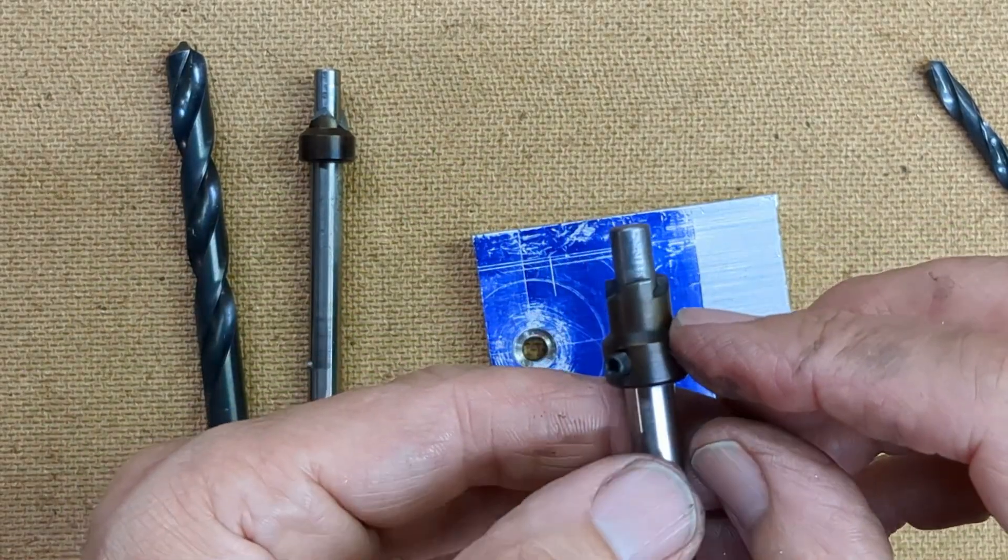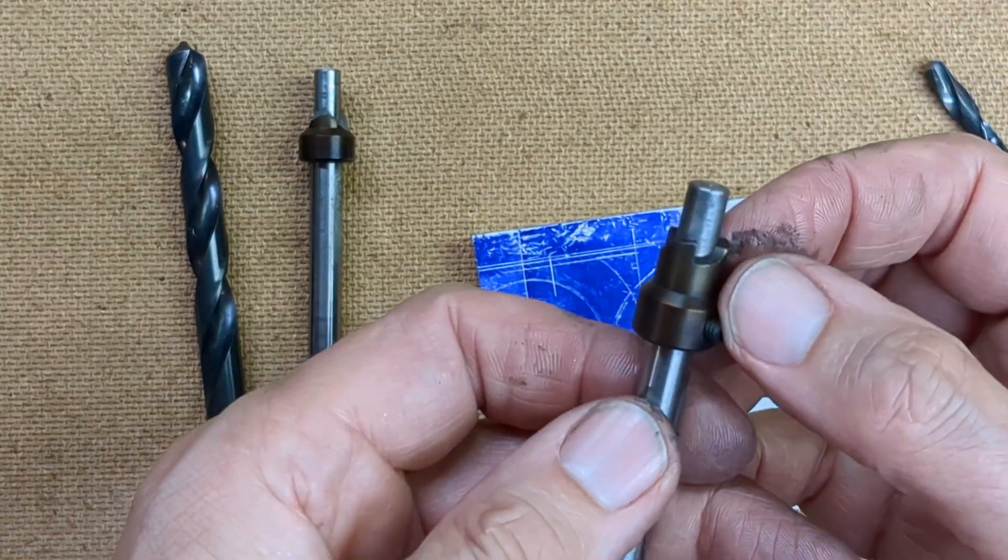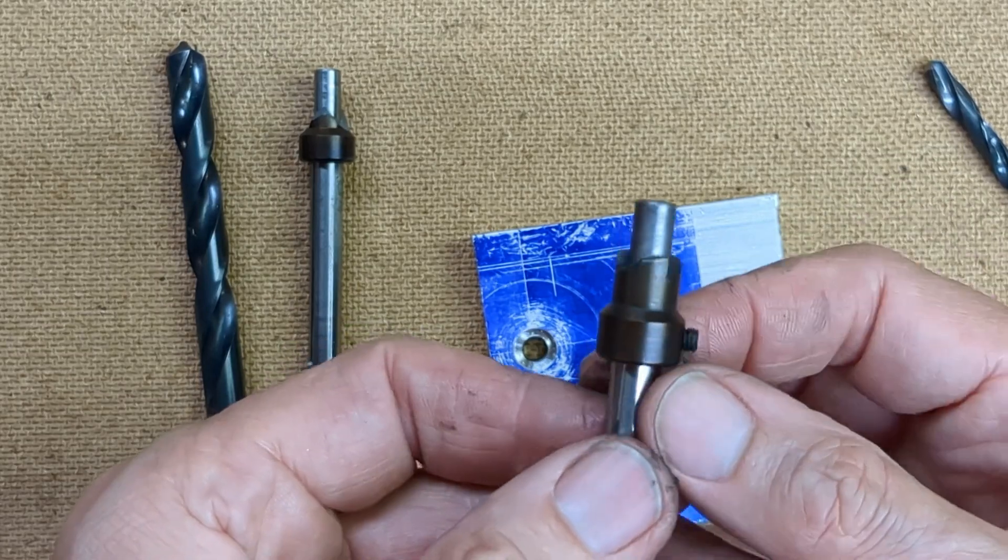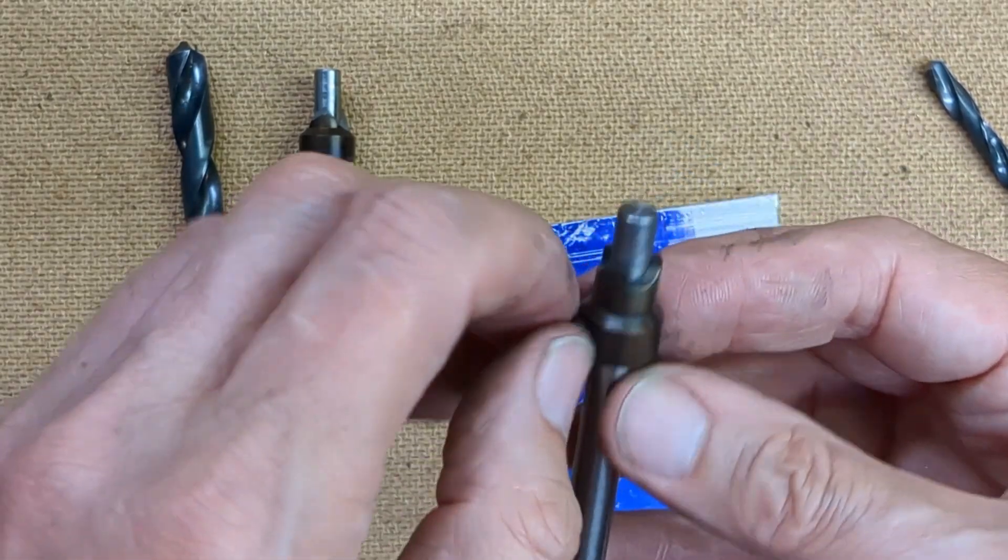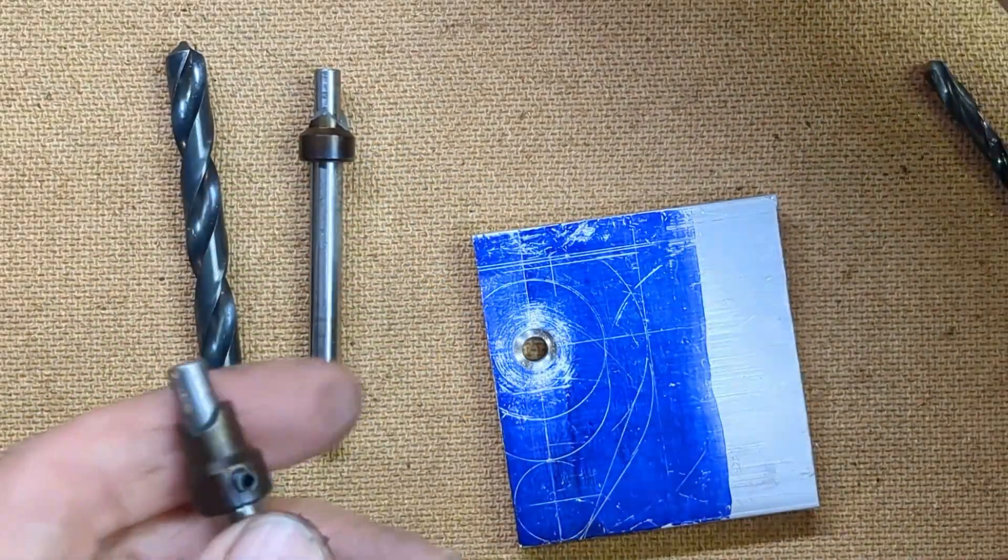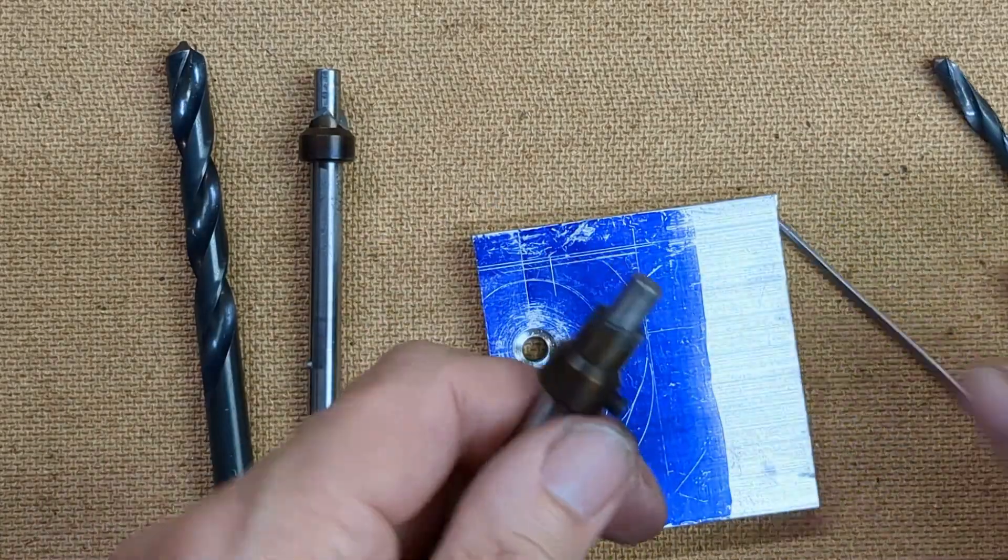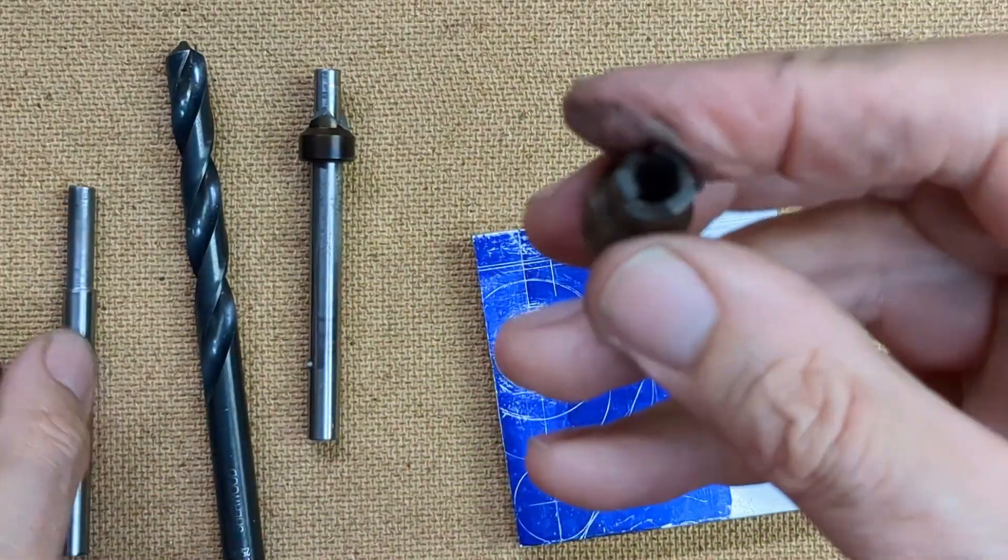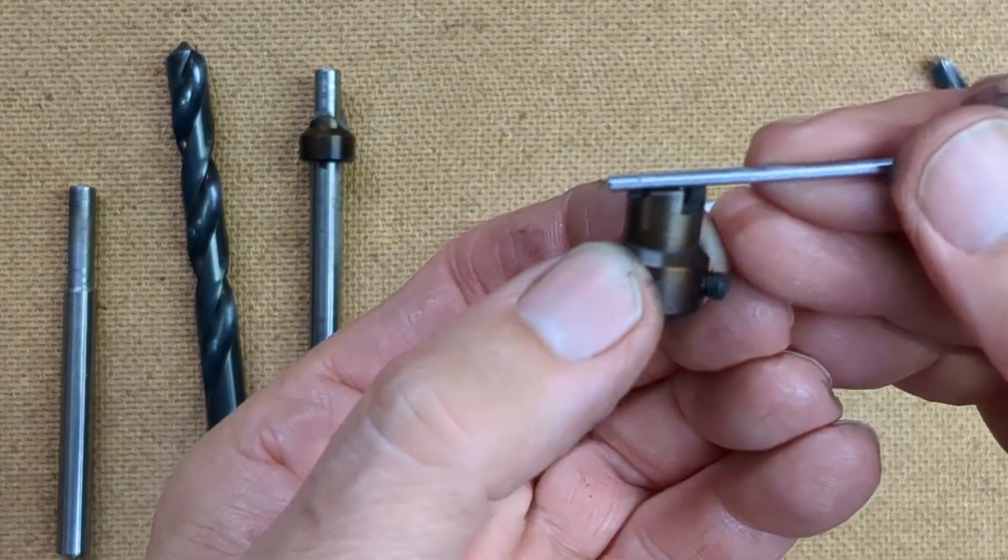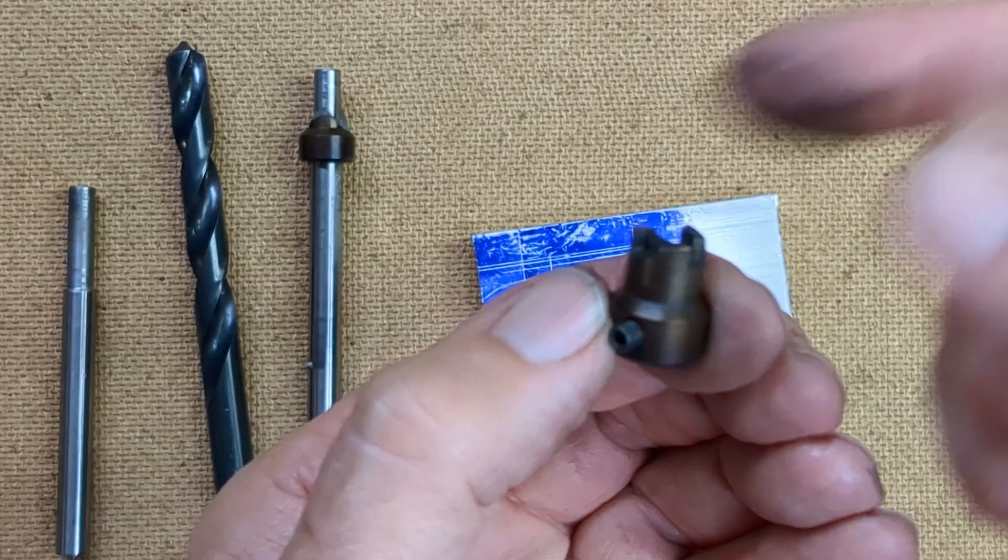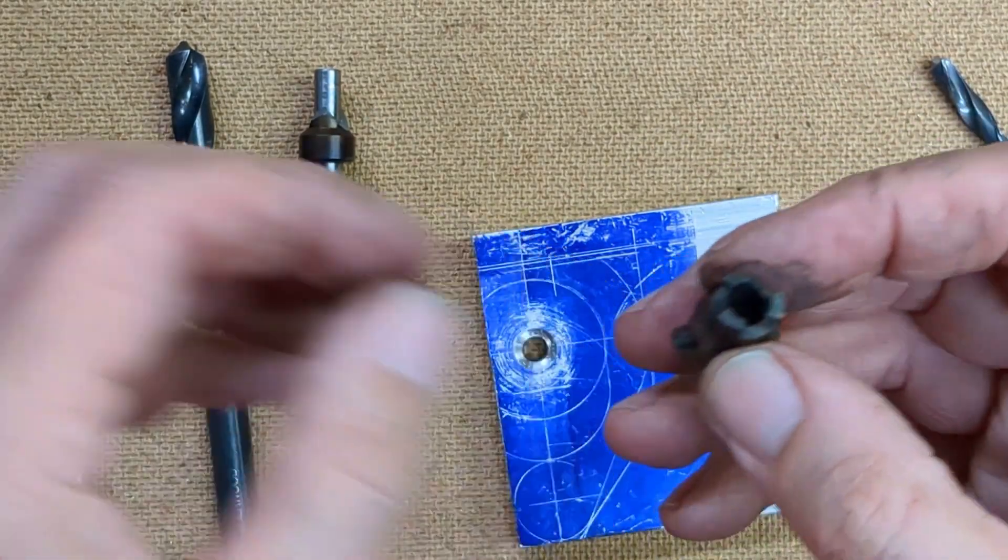And you can see why these are inherently fragile, because you don't have the support of the center section, whereas the commercially made ones, of course, are solid. But the advantage of this is that I can remove this and I can touch up these top surfaces and hopefully restore the sharpness. So that's my plan.